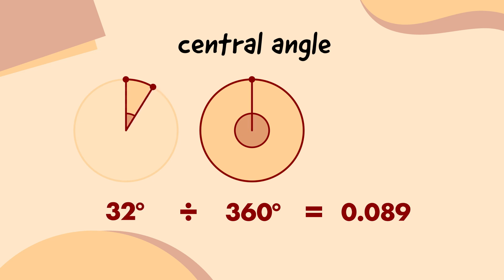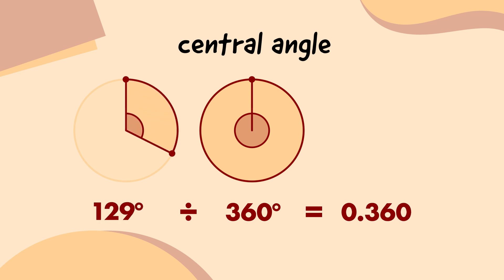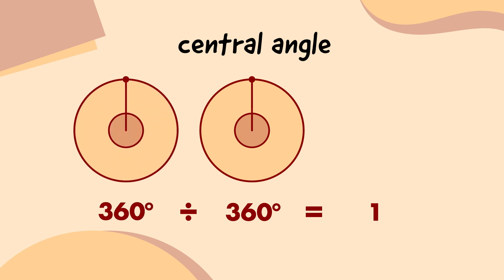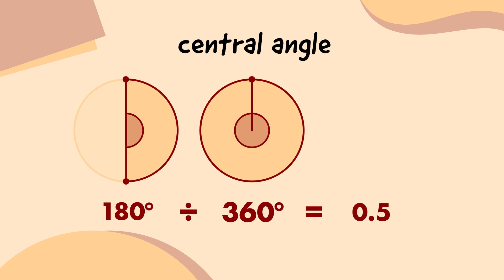As the central angle gets smaller, the size of the arc length and sector area gets smaller. And as the central angle gets bigger, the size of the arc length and sector area gets bigger. So we know that this central angle is equal to 180 degrees, and 180 divided by 360 is equal to 0.5. How do we use that to work out the size of the arc and sector?